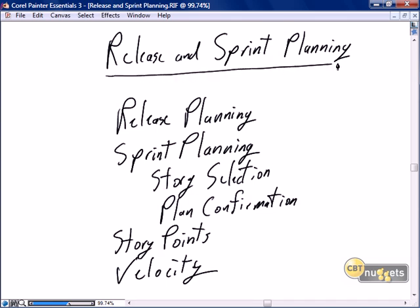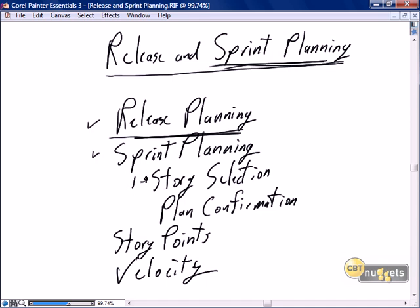This nugget is focused on release and sprint planning, where the major focus is going to be on sprint planning — that critical upfront activity that happens with each sprint where we select and agree to the stories that are going to be completed. We will discuss at a high level what release planning is all about, but our real focus is on the sprint plan: part one is story selection done with the product owner, and part two is the plan confirmation where the product owner is optional.